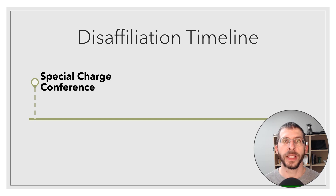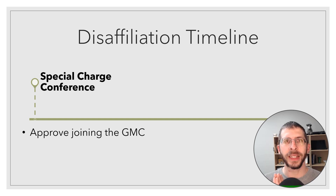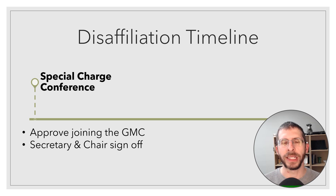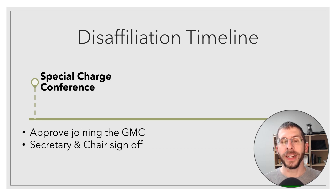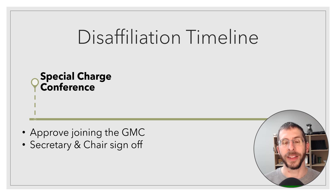At the special charge conference, your church votes to disaffiliate from the United Methodist denomination. Assuming that vote goes through and your church intends to join the Global Methodist denomination, your church should immediately have a second vote to join the Global Methodist denomination. I'll put a link in the description with some sample language for that resolution, because you'll need that resolution or a copy of the minutes showing the vote, printed, signed by the secretary and chairperson, and forwarded to the Global Methodist denomination.